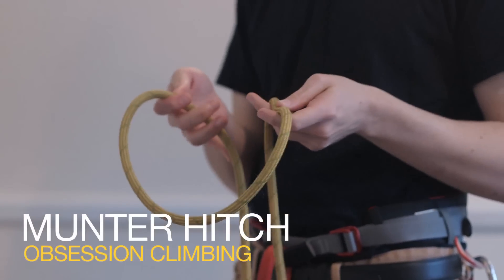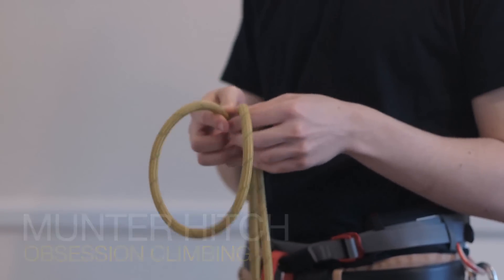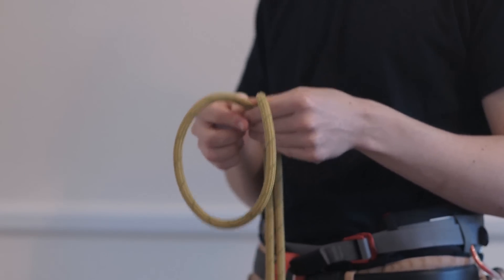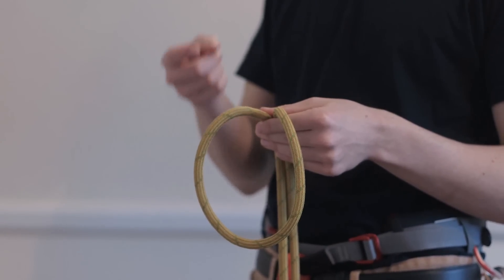It's called a Munter Hitch, or otherwise known as the Italian Hitch. And why is it important? Well, it can get you out of some sticky situations because it can be used as an emergency belay device or an emergency rappel device.